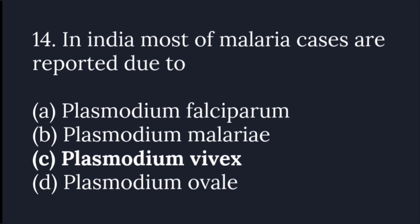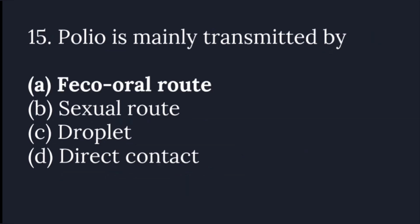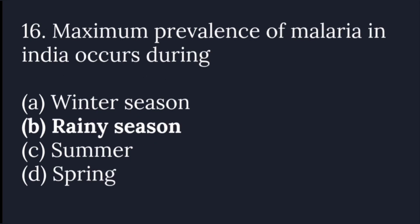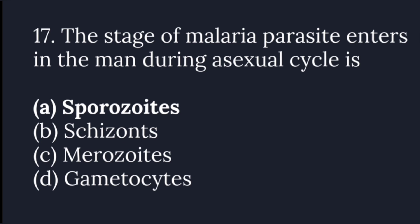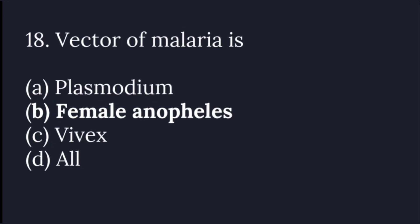In India, most malaria cases are reported due to Plasmodium vivax. Polio is mainly transmitted by feco-oral contamination. Maximum prevalence of malaria in India occurs during the rainy season, because water stagnation leads to breeding of mosquitoes. The stage of malarial parasite that enters man during the asexual cycle is called sporozoites. The vector of malaria is the female Anopheles mosquito.